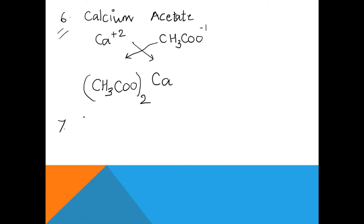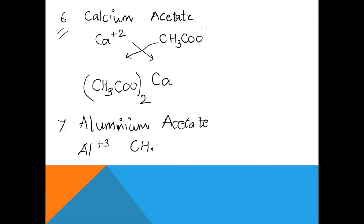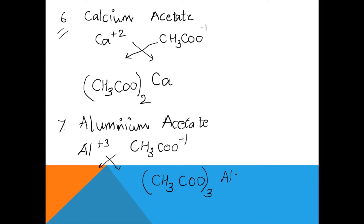Let's take another example with acetate: aluminium acetate. Aluminium has a charge of plus three and acetate is CH₃COO⁻¹. When we do the crisscross, remember that the acetate radical must be written first. So we write (CH₃COO)₃Al. The 3 from aluminium touches the feet of acetate. For aluminium, you may write 1 or omit it — both are acceptable.